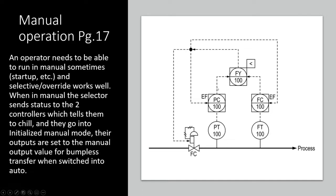So that when we switch them over into auto, there's not going to be any bump. Reset tieback, external feedback, eliminating bumpless transfer — that's the whole point.